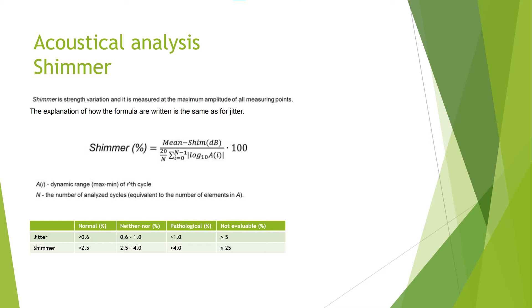He only spends one paragraph on shimmer, and I quote: analogously, the reproducibility of individual volume peaks is termed shimmer. The overall amplitude is averaged and the deviation of individual amplitudes from the average is calculated, then itself averaged and expressed as a percentage.